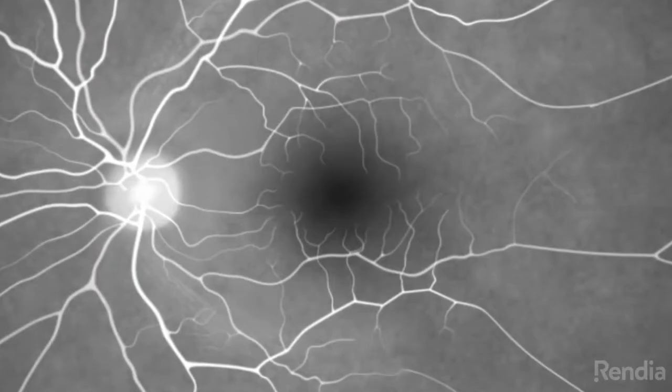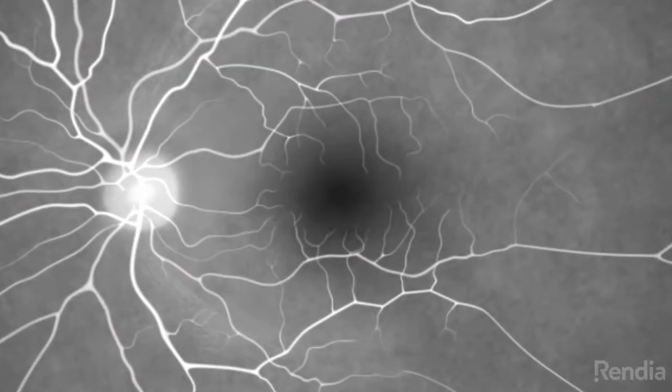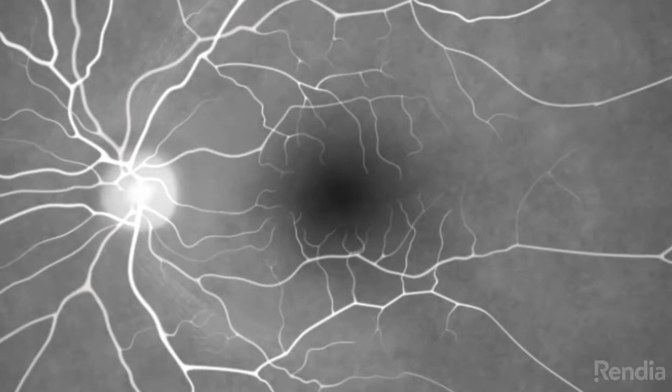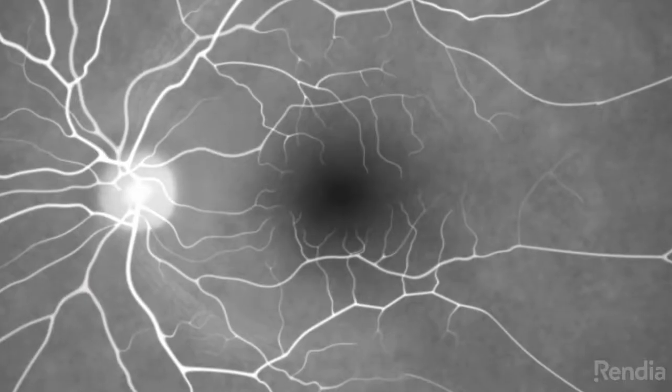A specially equipped camera then captures a series of photographs of the dye as it circulates through the retina and choroid.